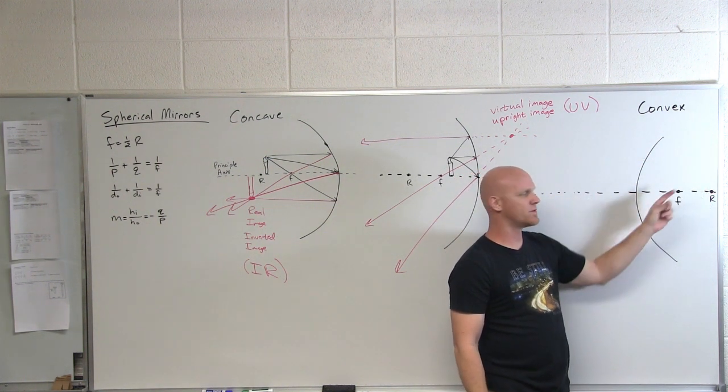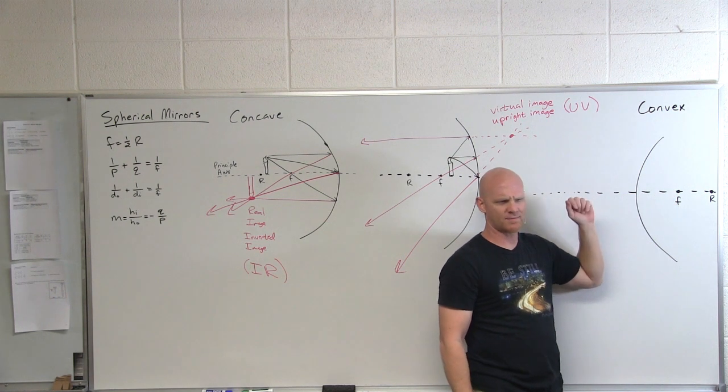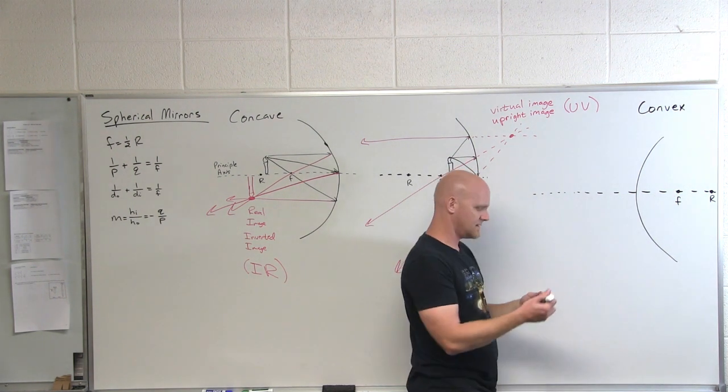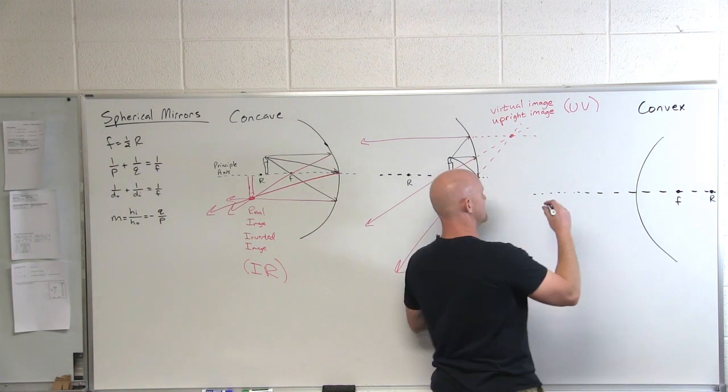And so your radius of curvature is back there, which means your focal distance is actually back behind the mirror as well, which is kind of a little funny thing. But we can do the same kind of thing here.